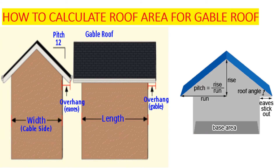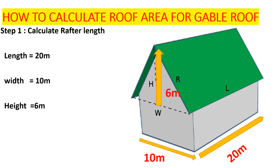In this case, our house has a length of 20 meters, a width of 10 meters, and the rise (h) is 6 meters. We are going to include the eaves on the width side. On the length side, we also include the overhang — protruding from this point here up to this point here.